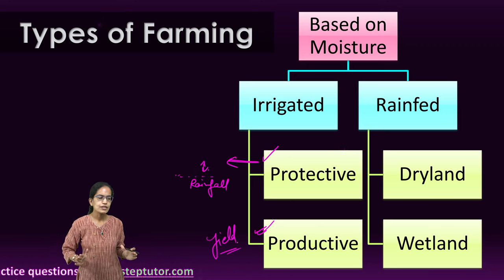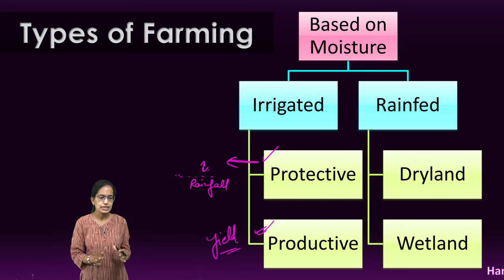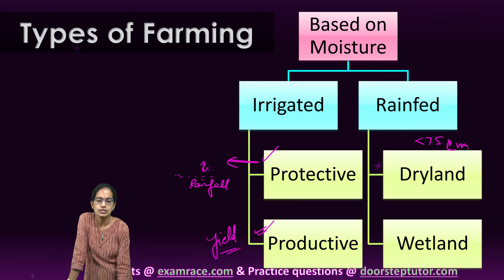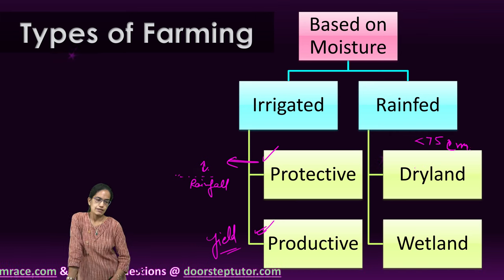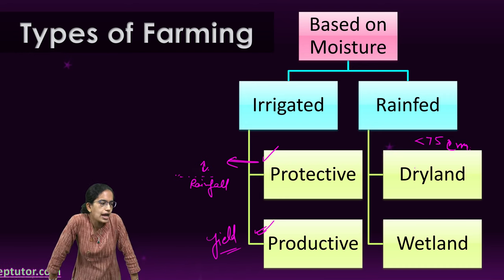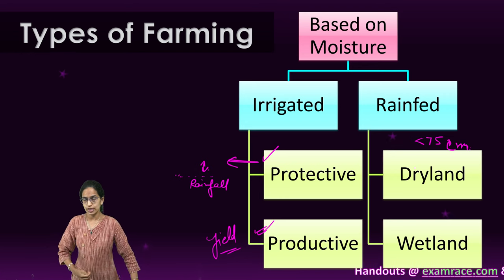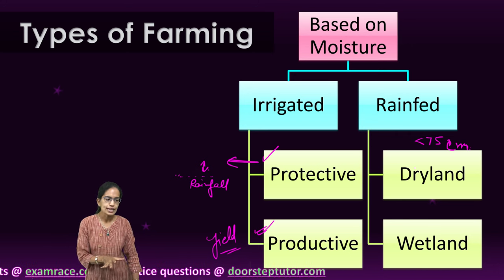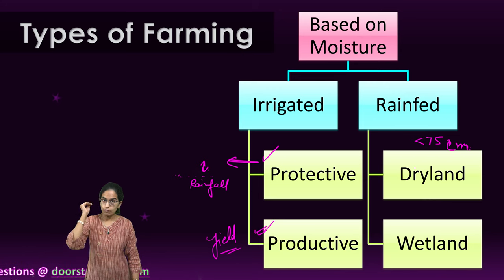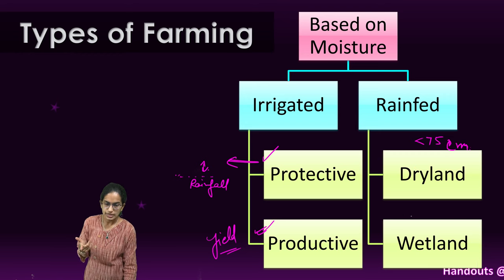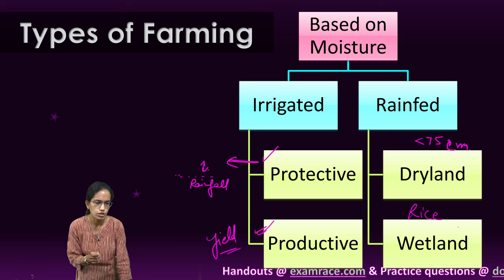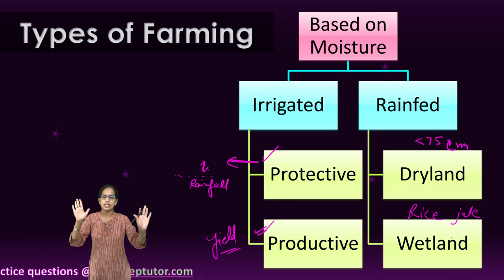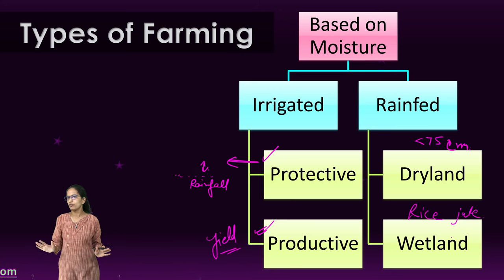Rain-fed farming is classified based on water availability. Dry land farming is practiced where rainfall is less than 75 centimeters, with crops like coarse grains, millets, jowar, bajra, ragi, and gram. Wetland farming involves intense water availability and supports water-intensive crops like rice, sugarcane, and jute.